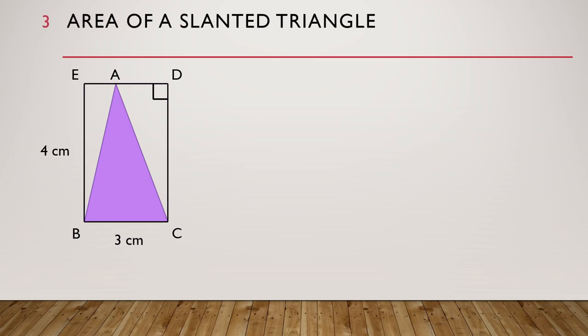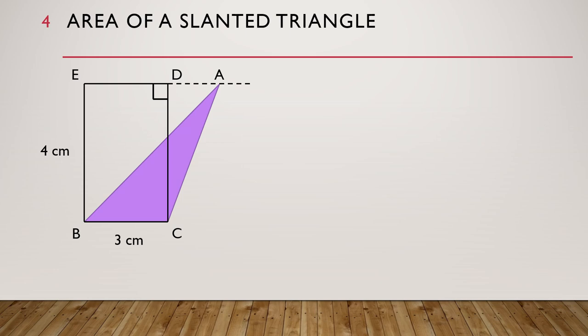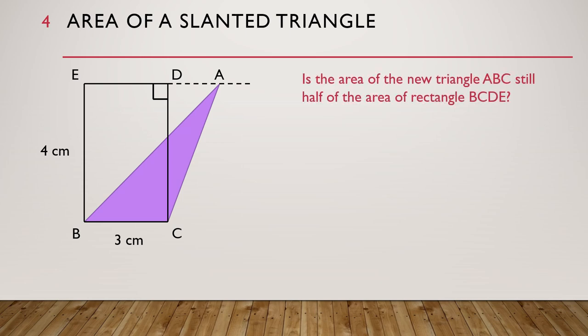Now we are going to change triangle ABC again. First, we extend the line ED out like this, and then we move point A out like this. But BC still stays the same. So, is the area of the new triangle ABC still half of the area of rectangle BCDE? Let's find out.